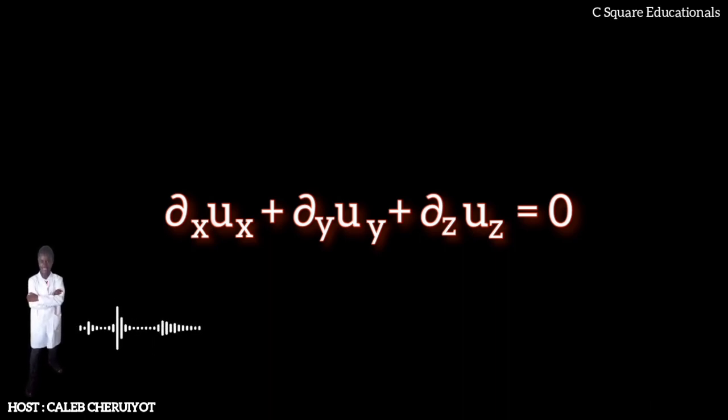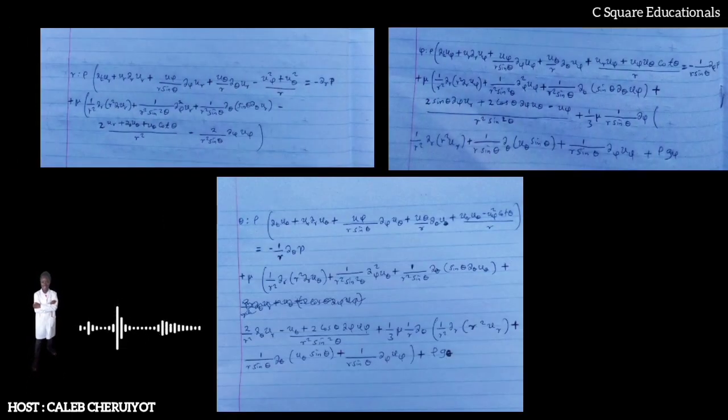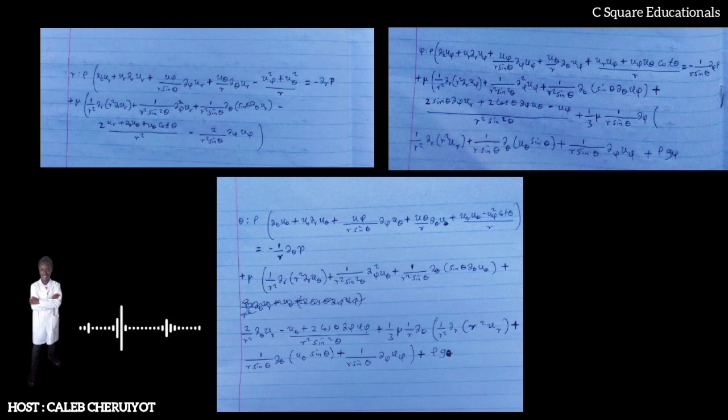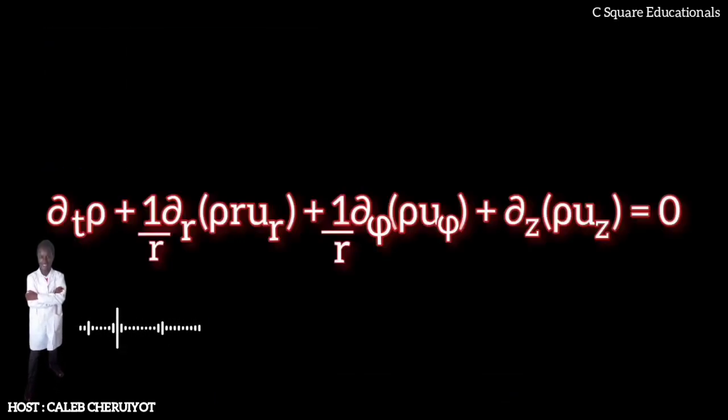A change of variables on Cartesian equations will yield the following momentum equations for r, φ, and z as shown. The gravity components will generally not be constants. However, for most applications, either the coordinates are chosen so that the gravity components are constant, or it is assumed that gravity is counter-directed by a pressure field. For example, flow in a horizontal pipe is treated normally without gravity and without a vertical pressure gradient. The equations are as shown. This cylindrical representation of the incompressible Navier-Stokes equations is the second most commonly seen, the first being Cartesian above.